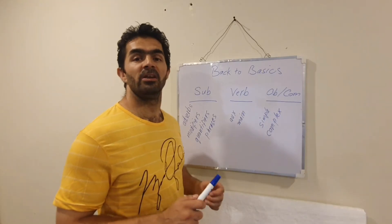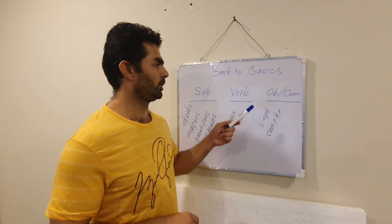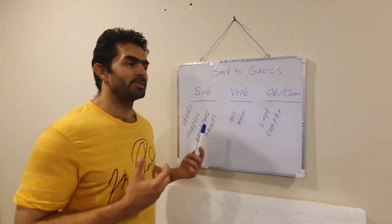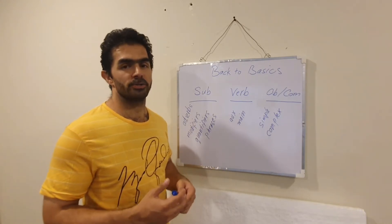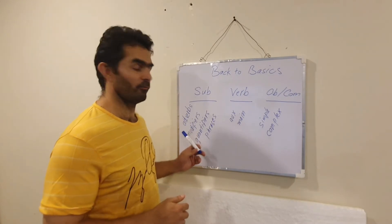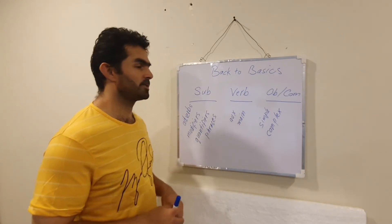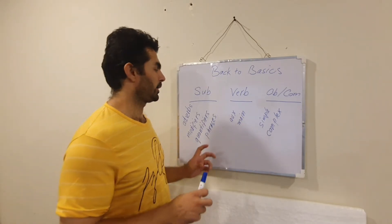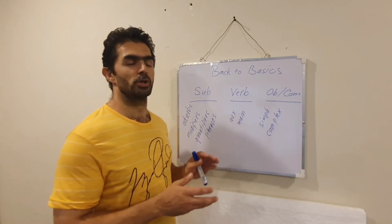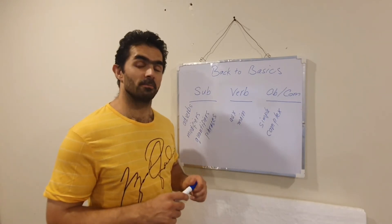We have three very basic words in a sentence: subject, verb, object, or sometimes complement. If a subject is one word, it's easy and understandable. Sometimes it is not one word — it may contain adverbs, modifiers, quantifiers, phrases, and other words. Those come along as or around the subject, and that is what makes complexity.